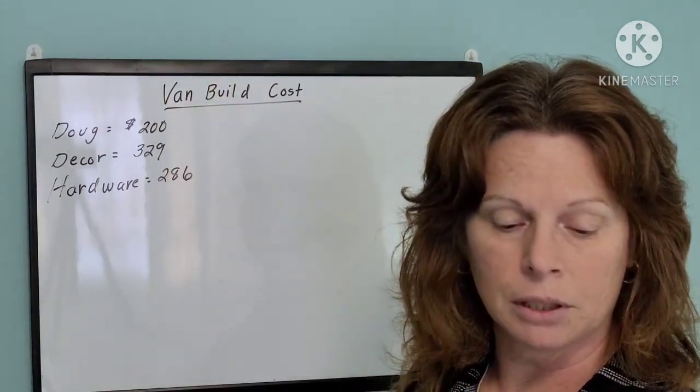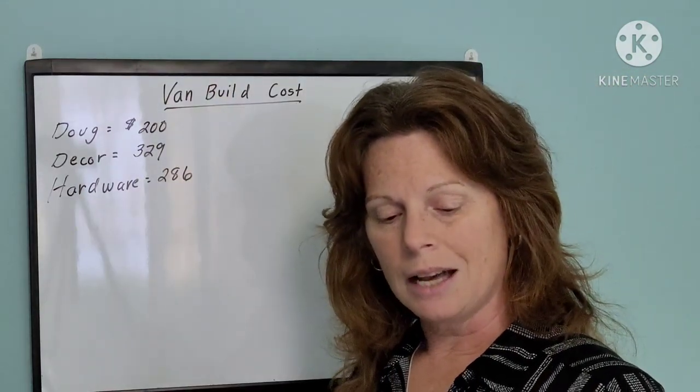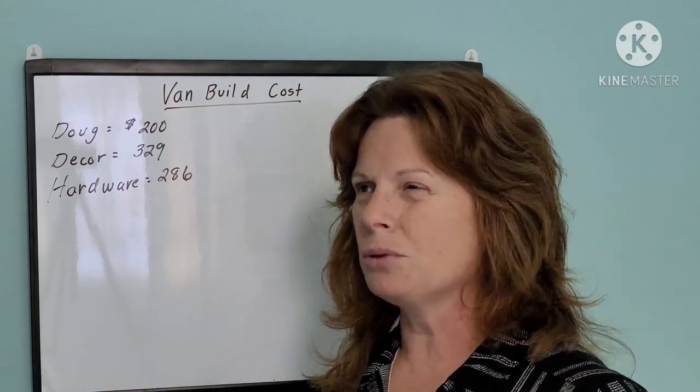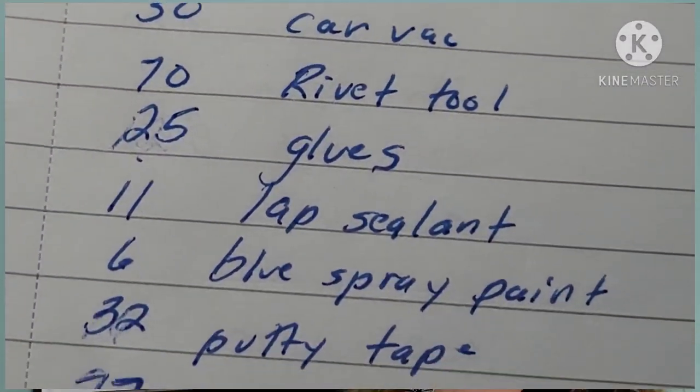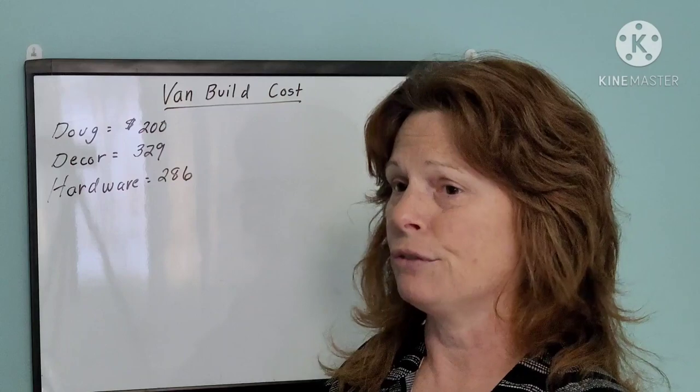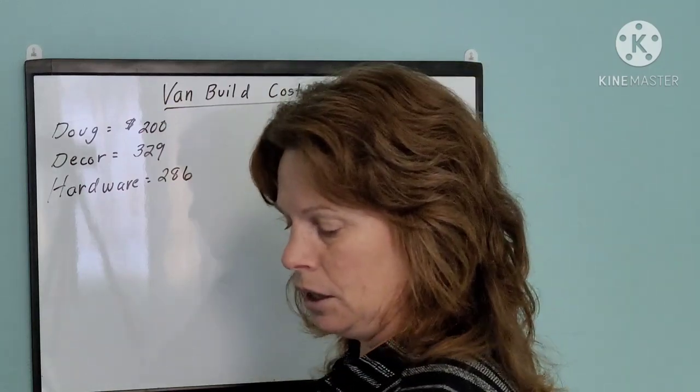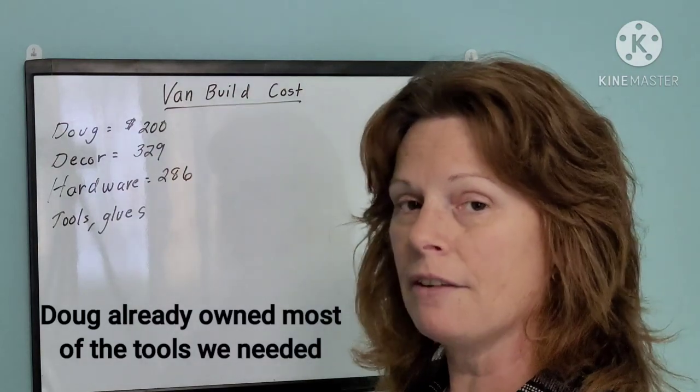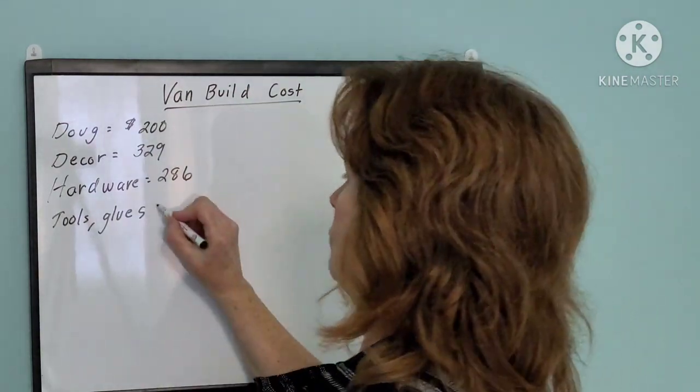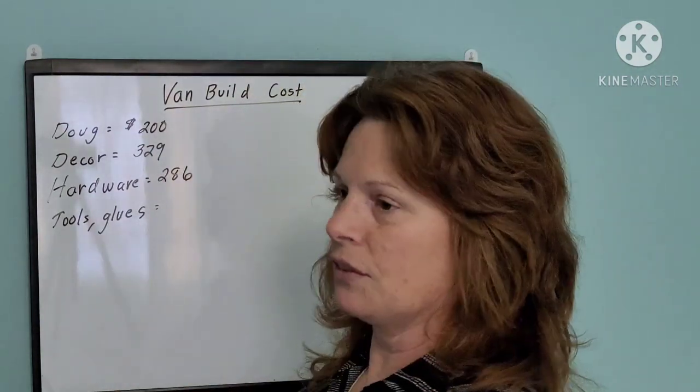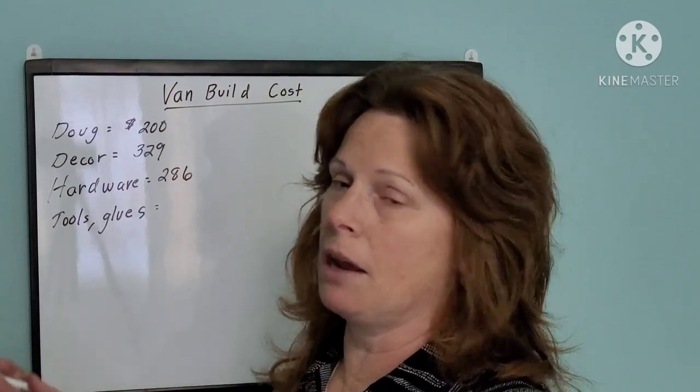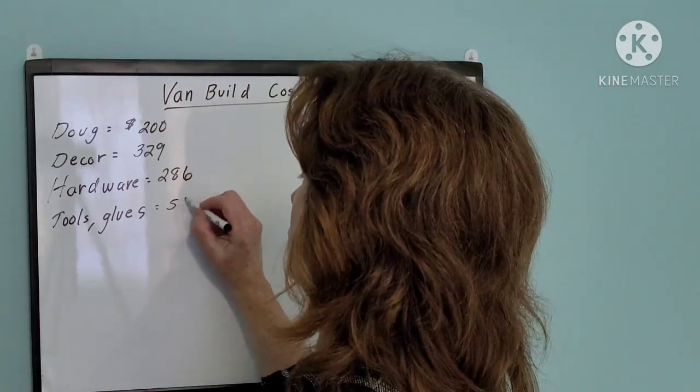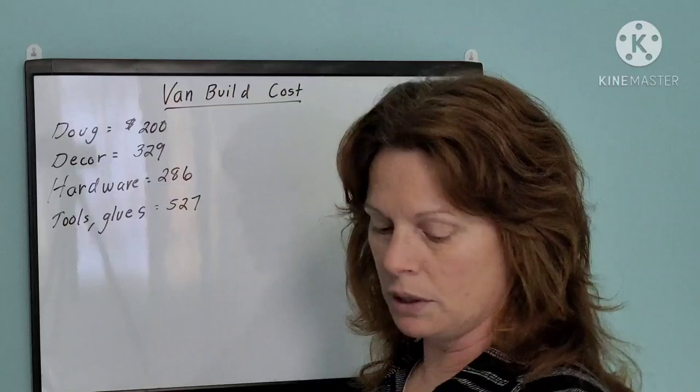So the next category I'm going to call, it's kind of tools, but it's more like glues and adhesives and paints and rust converter, stuff like that. I'm just going to write tools, glues. So on that, I spent about $527. That's all that stuff is very consumable, but some people may already have some of that stuff.